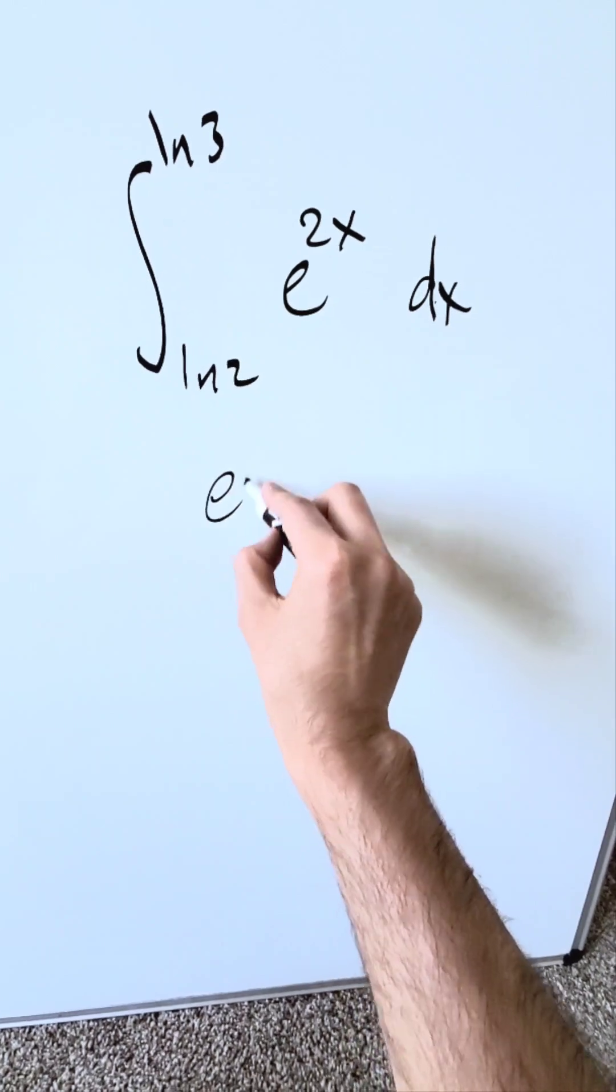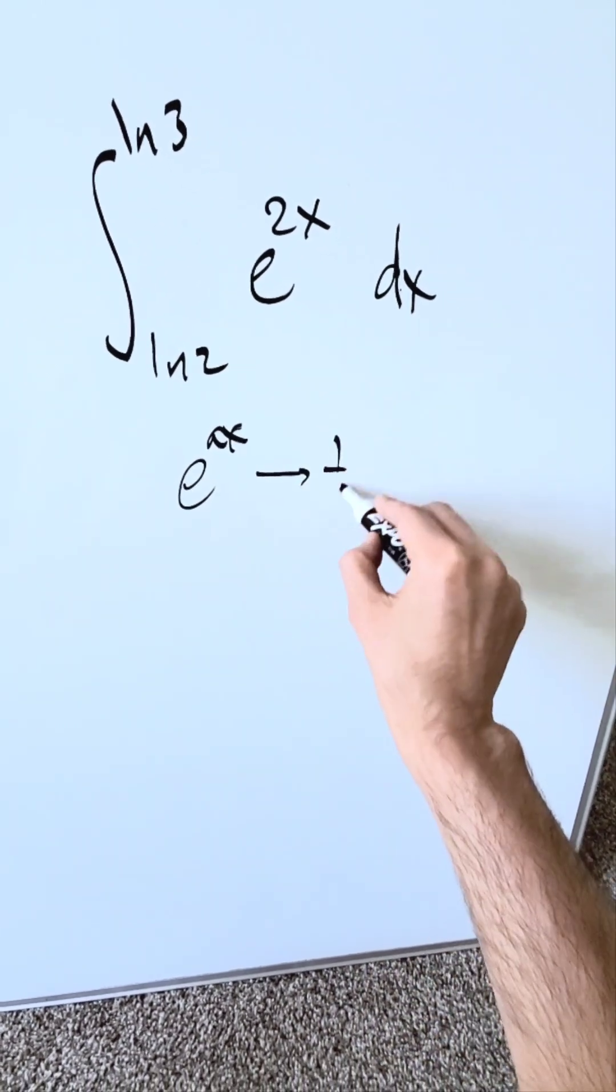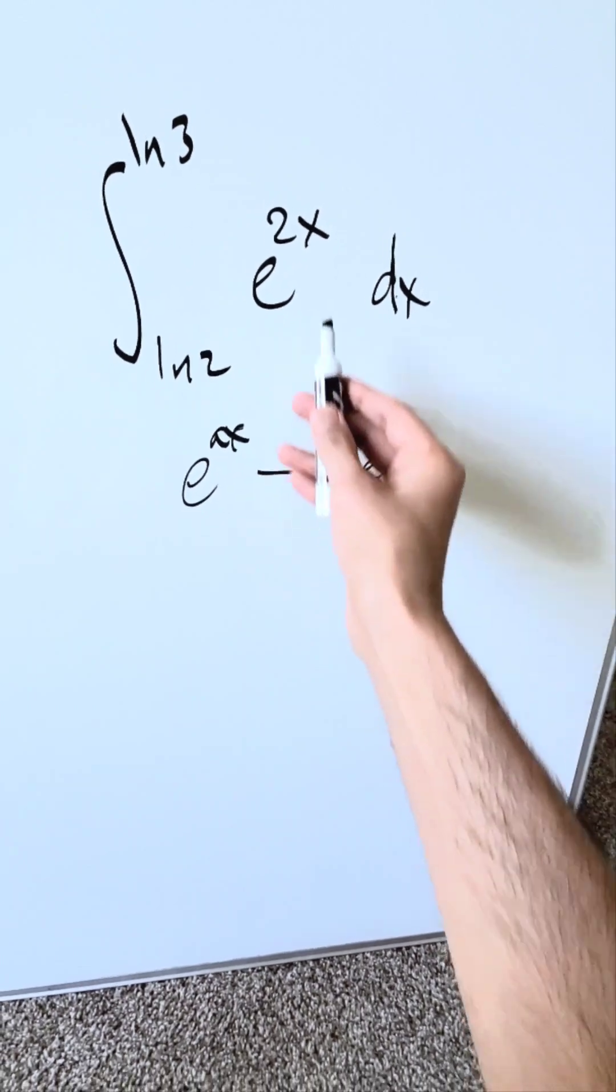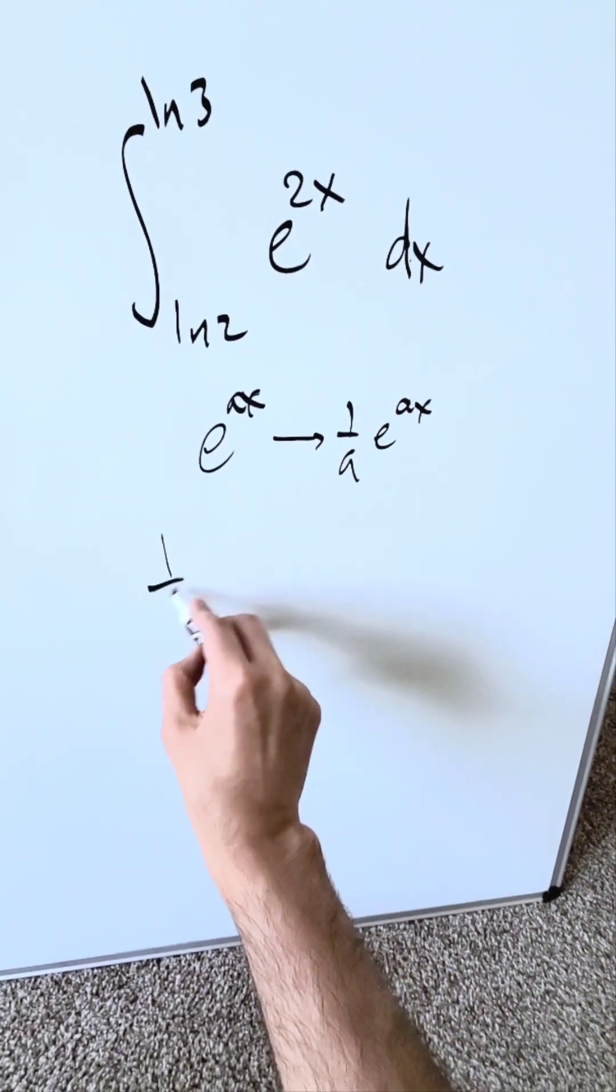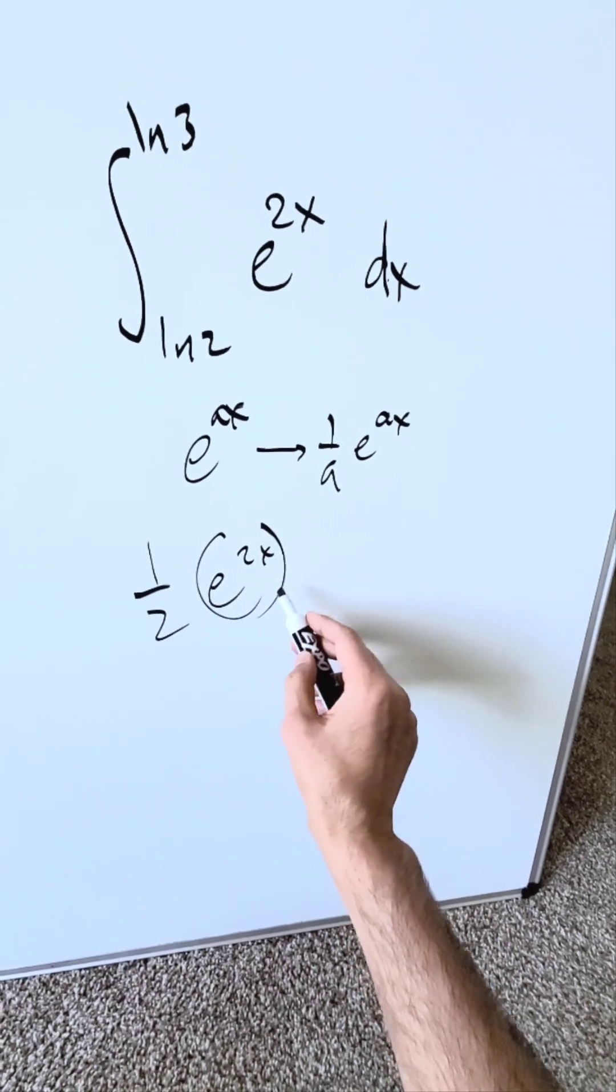Keep in mind, when you're looking at e to the power of ax, where a is a constant, the antiderivative is 1 over a times e to the power of ax. When I look here at e to the power of 2x, I know I'll have 1 over 2 e to the power of 2x as my antiderivative.